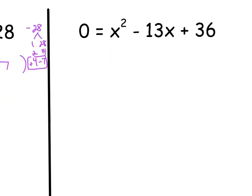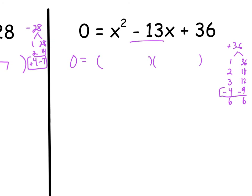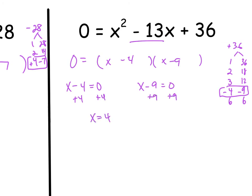For the last one, we set up the factors and look at factors of 36: 1 and 36, 2 and 18, 3 and 12, 4 and 9, and 6 and 6. Since it's positive 36, I need two positives or two negatives. I want it to give me negative 13, so I need two negatives — that's negative 4 and negative 9, which adds to negative 13. So: x minus 4, x minus 9. Setting each equal to zero and adding 4 and 9 respectively, I get x equals 4 and x equals 9.